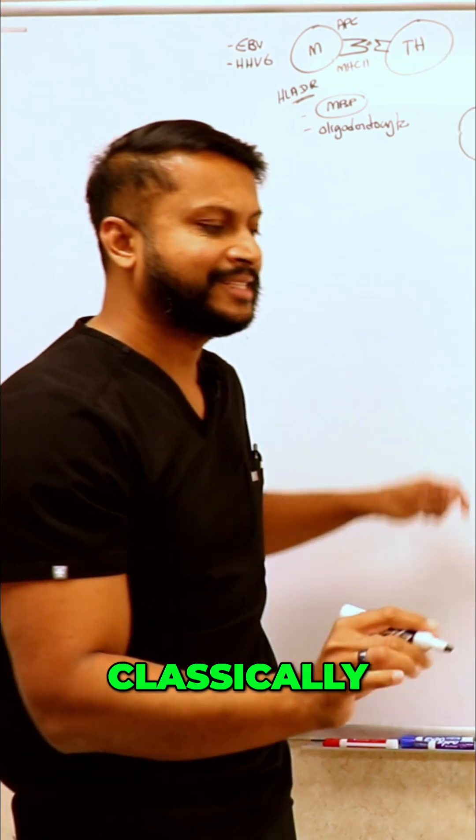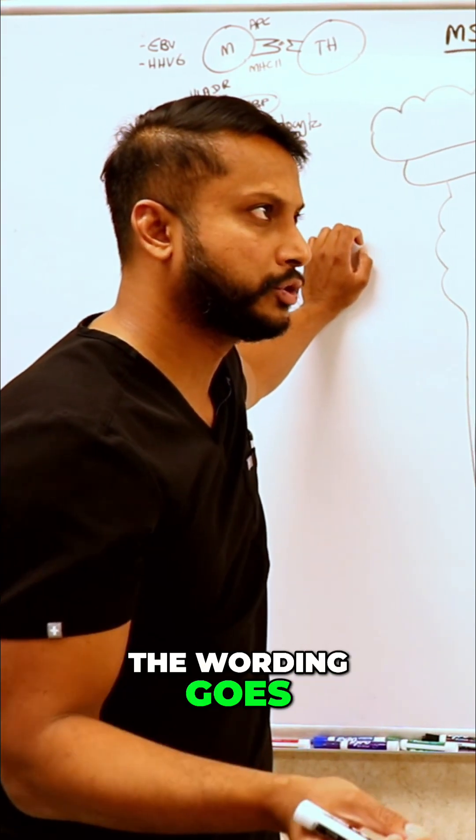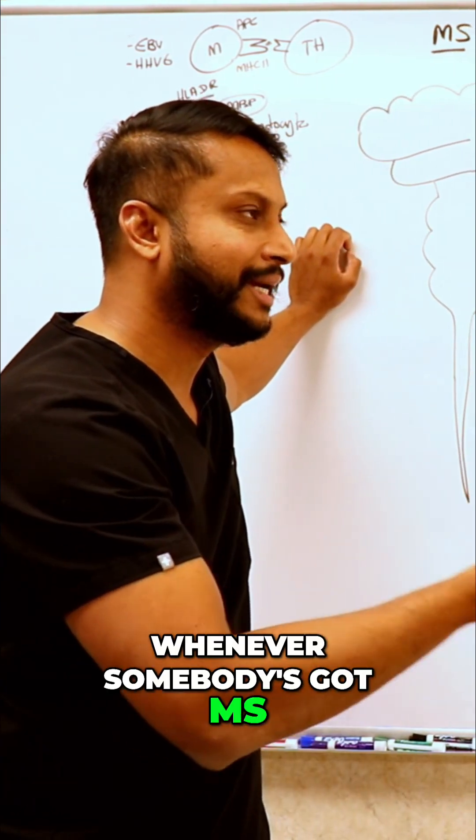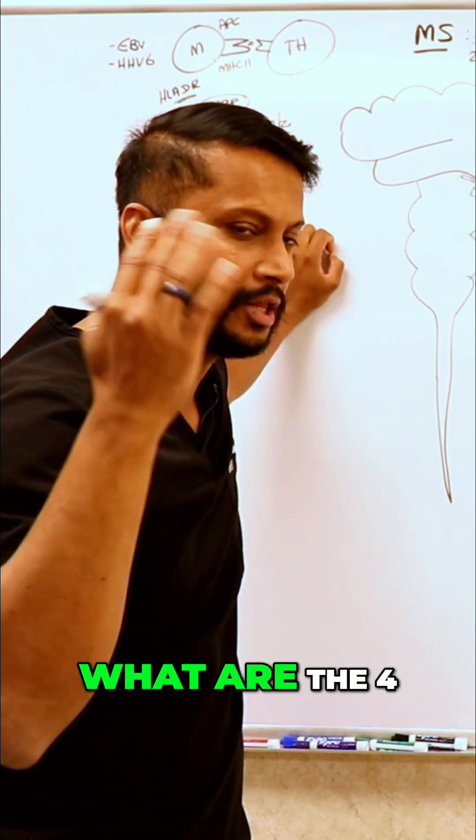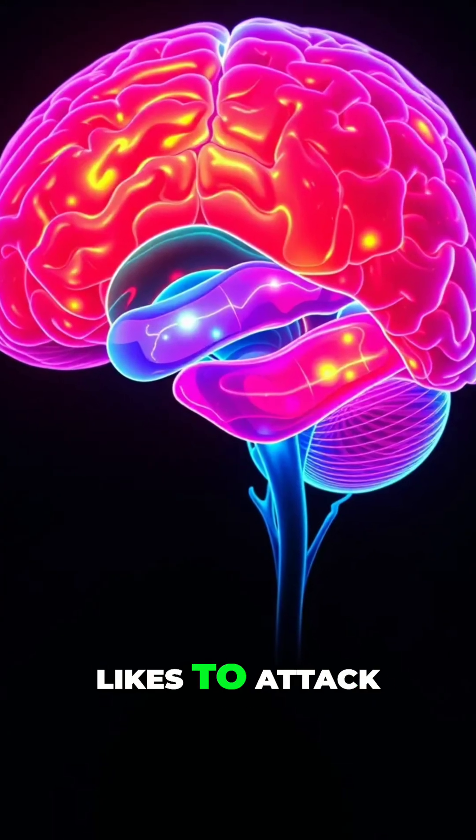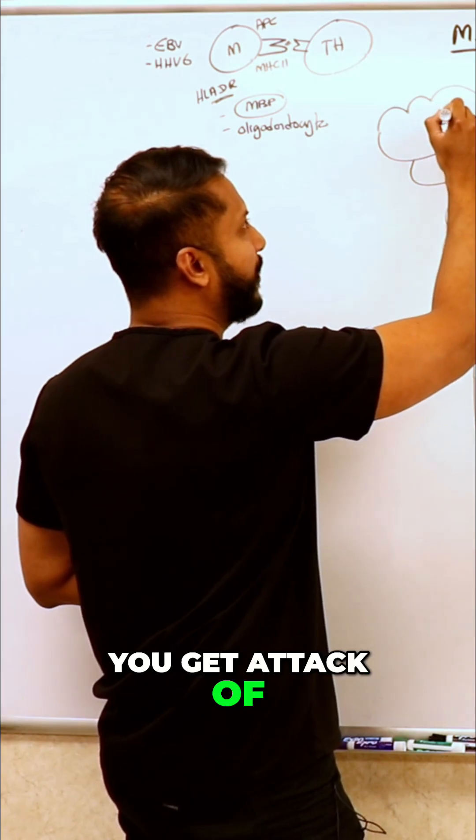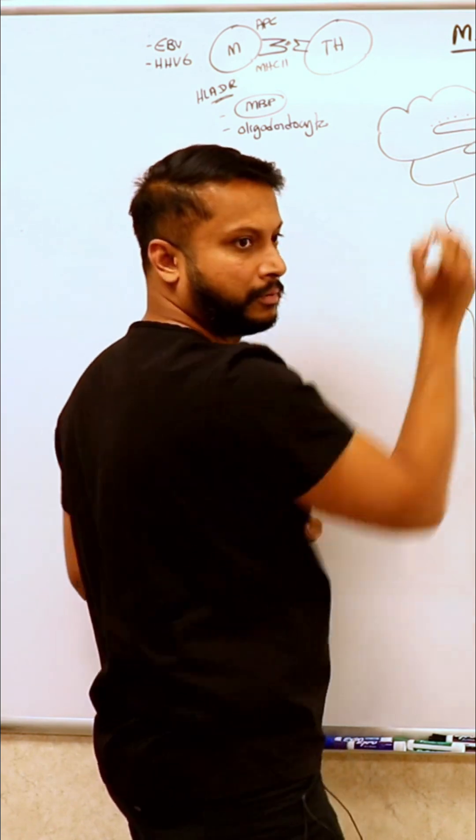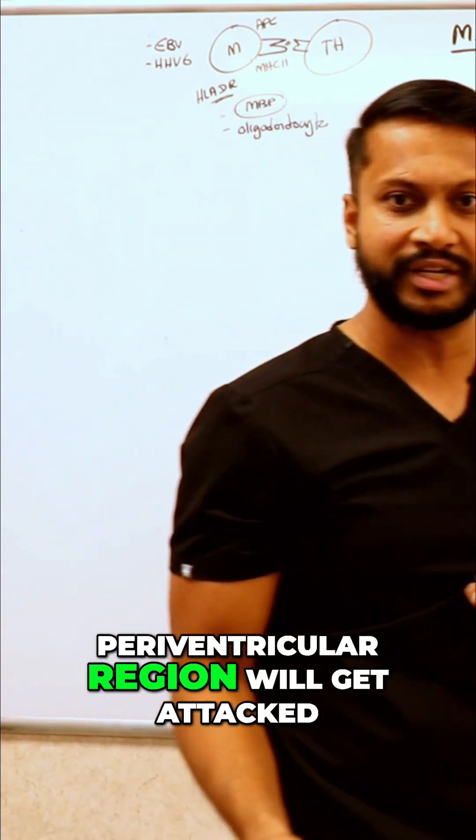Now classically, the wording goes whenever somebody's got MS, it likes to affect four areas. What are the four areas that MS likes to attack? You get attack of the periventricular region. Periventricular region will get attacked.